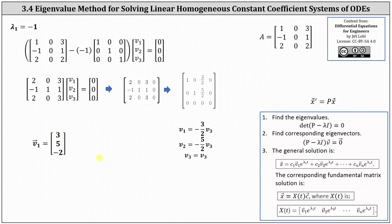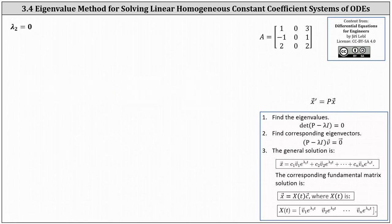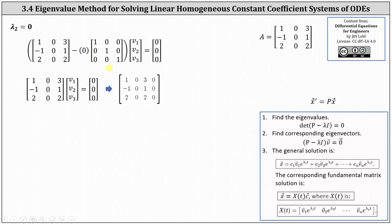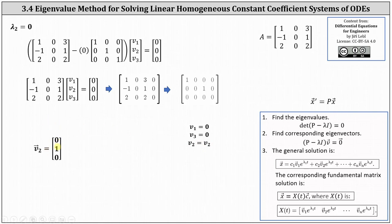For lambda sub two equals zero, the setup is the difference of matrix A and lambda times the identity matrix times vector V equals the zero vector. Since lambda sub two is zero, this simplifies to matrix A times vector V equals the zero vector. Writing the augmented matrix and reducing to row echelon form: V two is a free variable, row one indicates V one equals zero, and row two indicates V three equals zero. Letting V two equal one, the corresponding eigenvector is zero, one, zero.